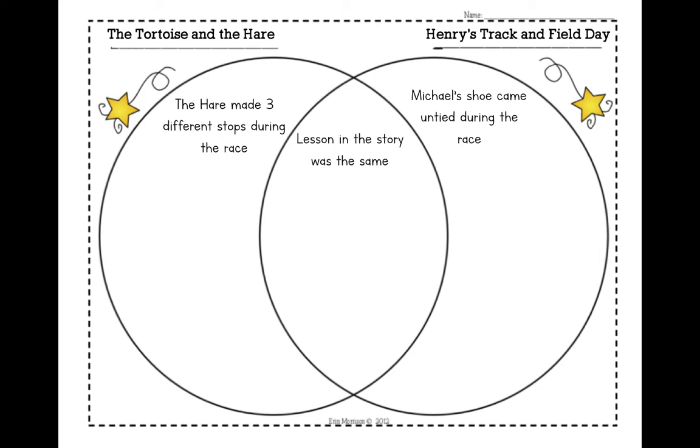And that was that slow and steady wins the race. The tortoise was slow and steady and beat the hare. Henry was slow and steady and beat Michael. That happened in both of the stories. That was a more obvious one.